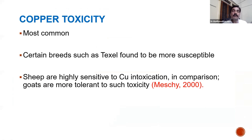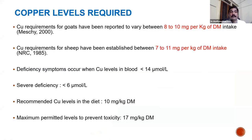Copper toxicity is very common in sheep, which are highly sensitive compared to goats. Certain breeds like Texel are more susceptible. As per Meshi 2000, goats are more tolerant of copper than sheep. Copper requirements for goats are 8 to 10 mg per kg, and for sheep 7 to 11 mg per kg dry matter. Deficiency symptoms are seen when blood copper is below 14 micromoles per liter, and severe deficiency when below 6 micromoles per liter. The recommended copper level is 10 mg and toxicity begins at 17 to 18 mg per kg dry matter, with symptoms of toxicity seen above 25 mg per kg dry matter.